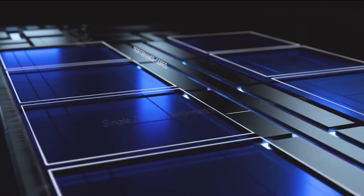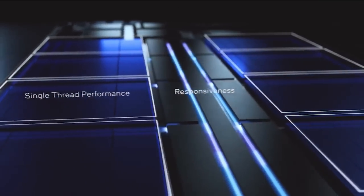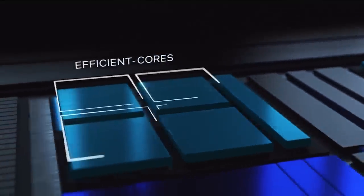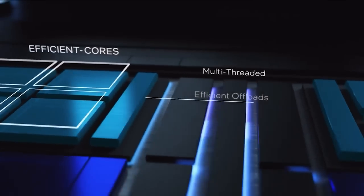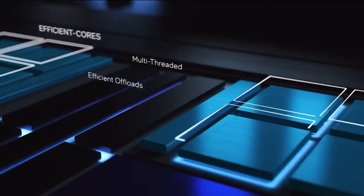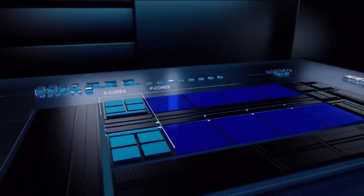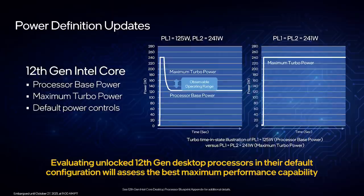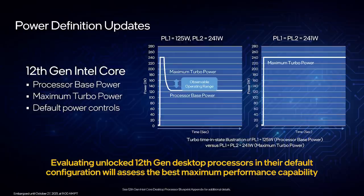Another quite important aspect of the 12900K is that it actually outperformed the 11900K by quite a margin in terms of power consumption efficiency. The 11900K runs at 250 watts, but the 12900K achieves a plus 50% improvement in multi-thread at 241 watts — basically the same power for 50% more performance. If you're running the CPU at 125 watts for normal metrics, you're looking at a 30% increase versus the 250-watt consumption of the 11900K.